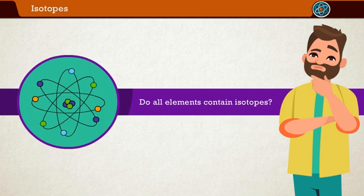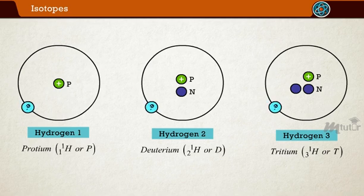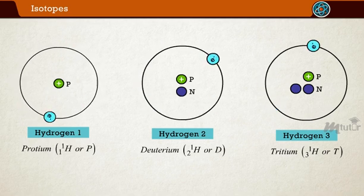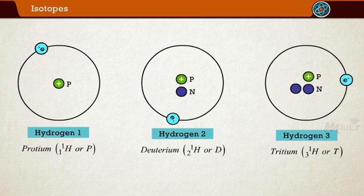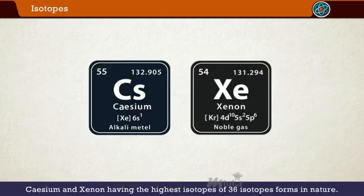Now a question may arise: Do all elements contain isotopes? To put it as short as possible, yes. All elements have some isotopes. Hydrogen only has three, which is by far the smallest number out there. Cesium and xenon each take the crown for the most naturally occurring isotopes, as they each have 36 isotopes that have been observed.